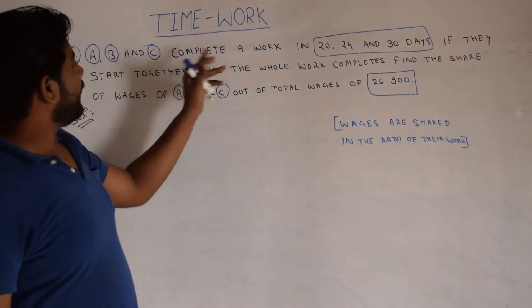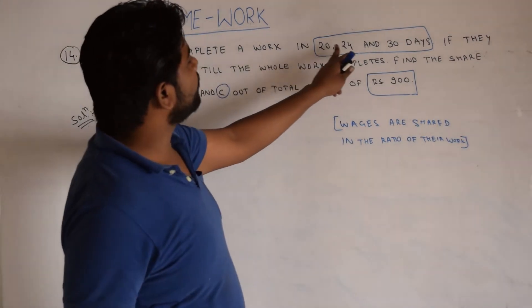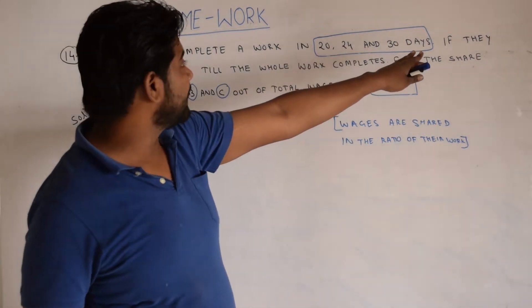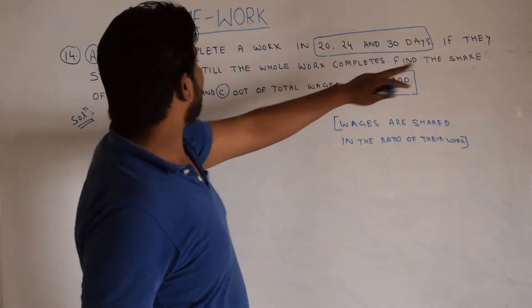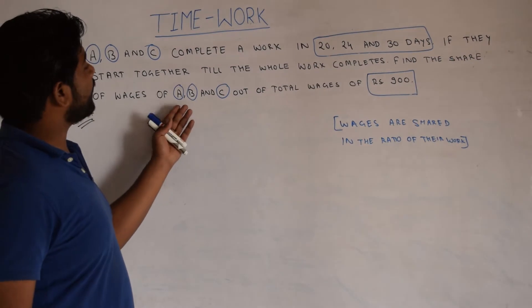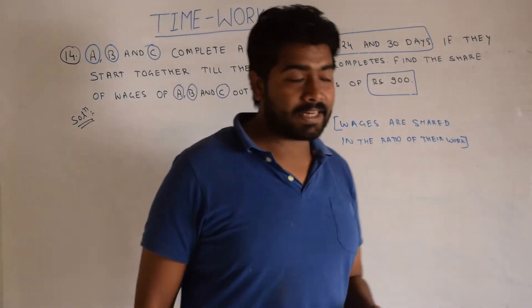In this question it is given that A, B and C complete a work in 20, 24 and 30 days. If they start together till the work completes, find the share of wages of A, B and C out of the total wage of Rs.900.